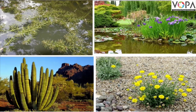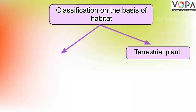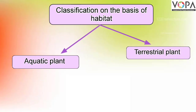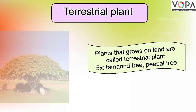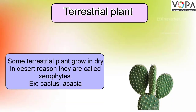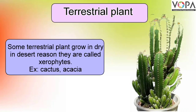Some plants grow on land and some plants grow in water. On the basis of their habitat, plants are classified as terrestrial plants and aquatic plants. Terrestrial plants: Plants that grow on land are called terrestrial plants. For example: tamarind tree, peepal tree. Some terrestrial plants grow in dry and desert regions — they are called xerophytes. For example: cactus plant, acacia plant, etc.